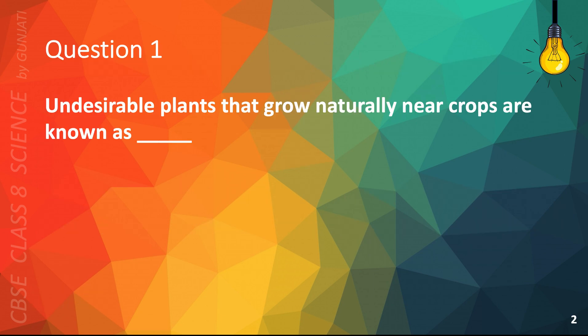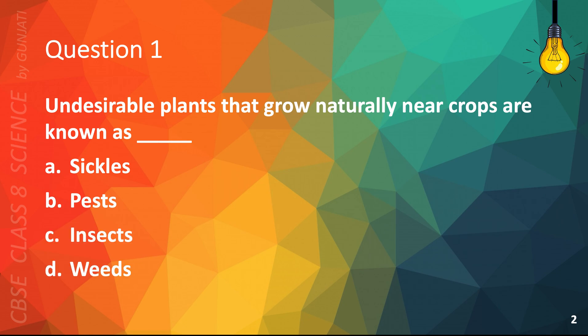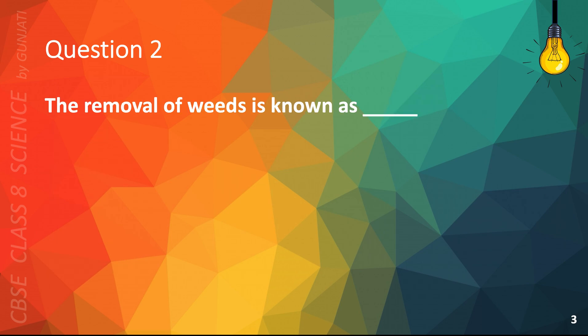Question 1. Undesirable plants that grow naturally near crops are known as: A. Sickles, B. Pests, C. Insects, or D. Weeds. The correct answer is D. Weeds.